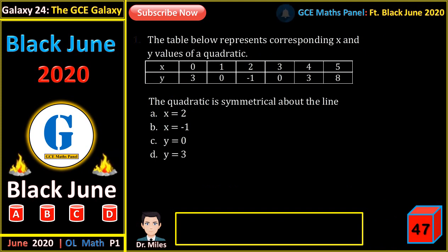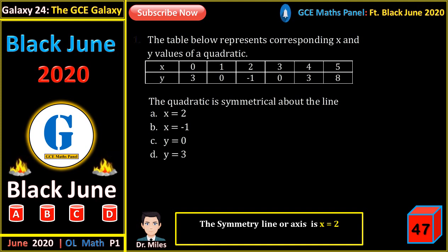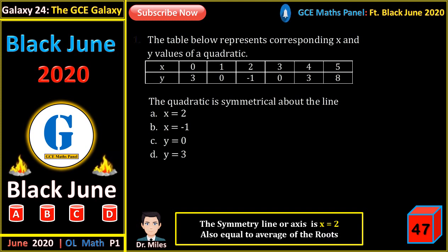The table below represents corresponding x and y values for a quadratic. The quadratic is symmetrical about which line? We observe the values of y and find the mirror line. That mirror line occurs when y equals minus 1. On the left and right of that boundary, the y values are 0, then 3, then 8 — symmetrical. The symmetry occurs when x is 2. Another way: take the average of the roots (where y equals 0), which are x equals 1 and x equals 3. The average gives x equals 2.